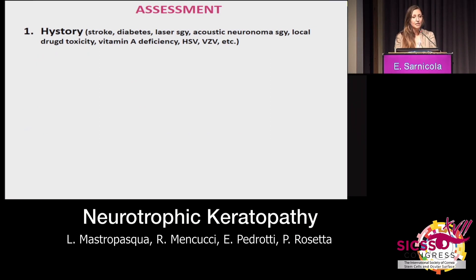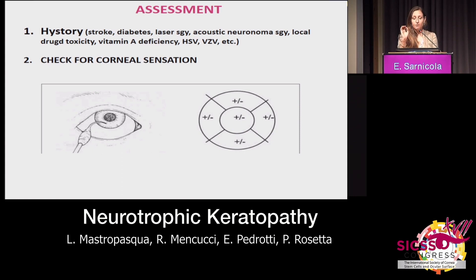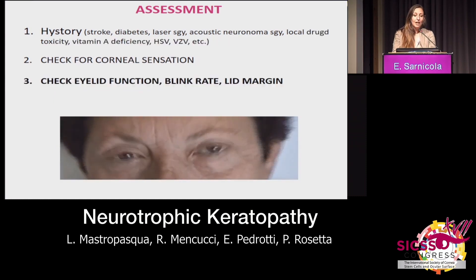The clinical history can help us identify the risk factors. Most importantly — and this is quite easily done — we should check the sensation of the cornea, as you may see here, in the four quadrants, because after herpes infections we have a sectoral loss of sensation. It isn't enough to test it in one point; it should be checked in all sectors.